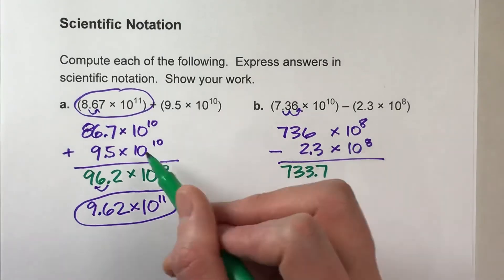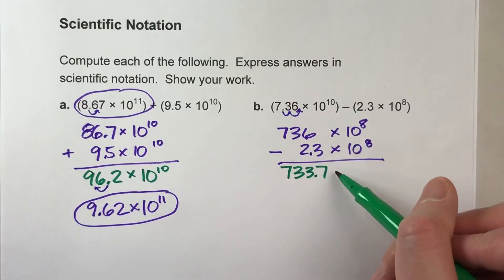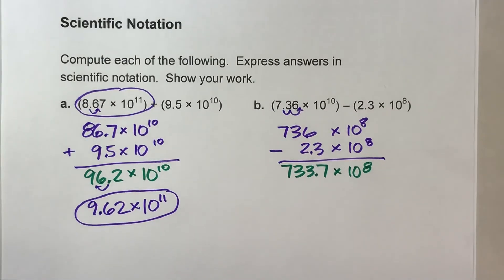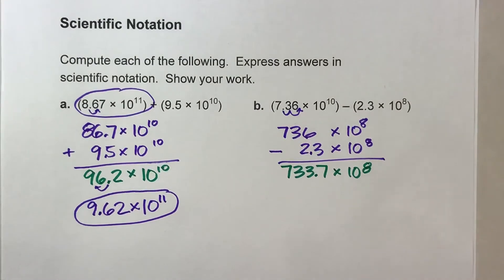And just like with adding, when you're subtracting scientific notation, that power of 10 stays the same. And now I have 733.7 times 10 to the 8th power.